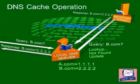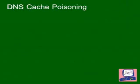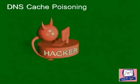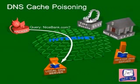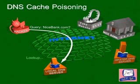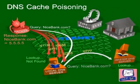Internet security researchers recently found a new form of attack. A hacker sends a request to a local DNS. The query is then forwarded to the Internet's DNS, and the attacker floods the local DNS with fake responses.